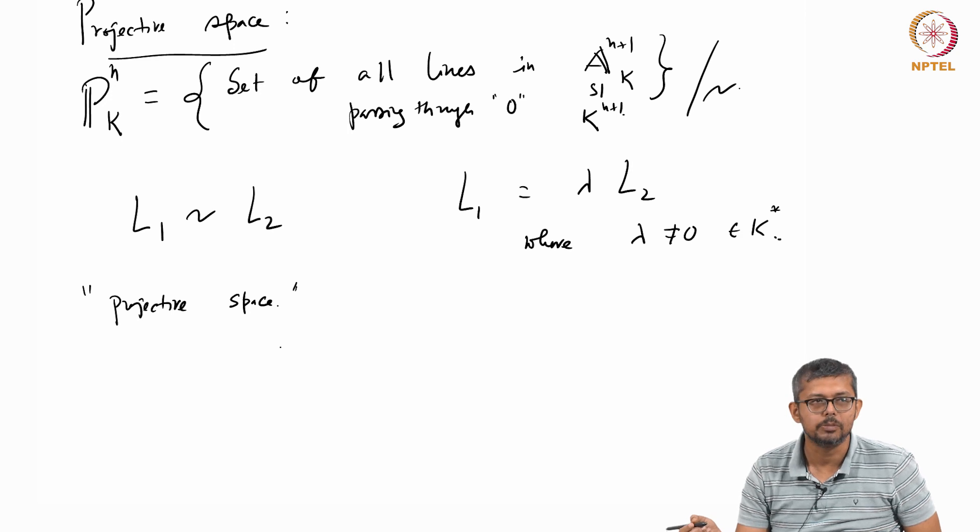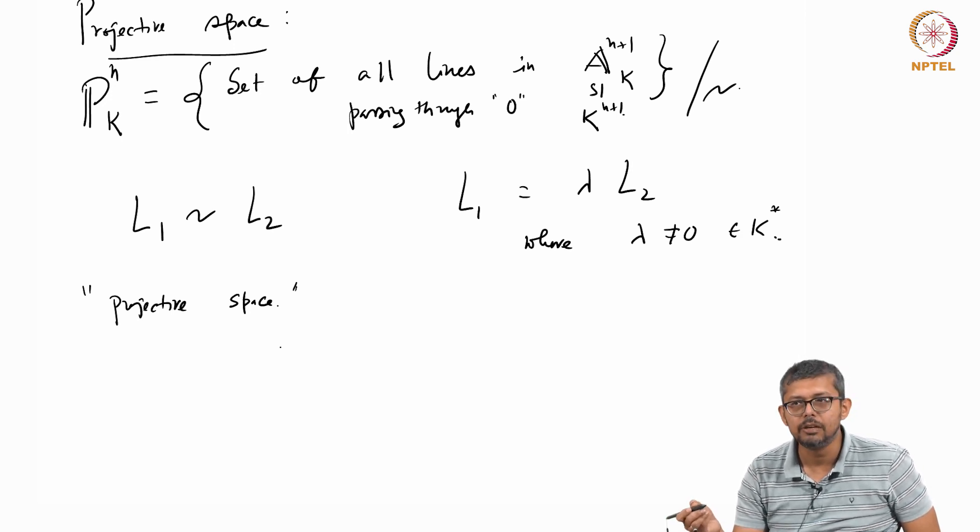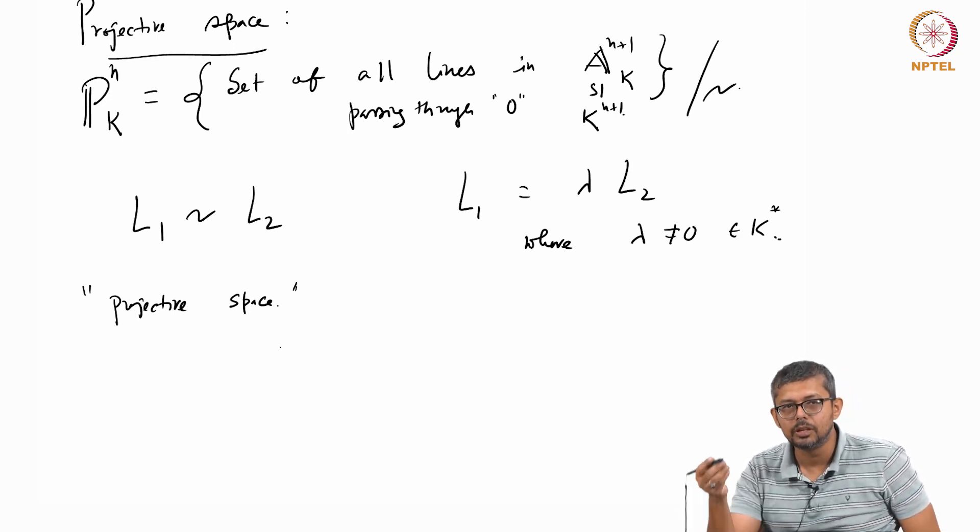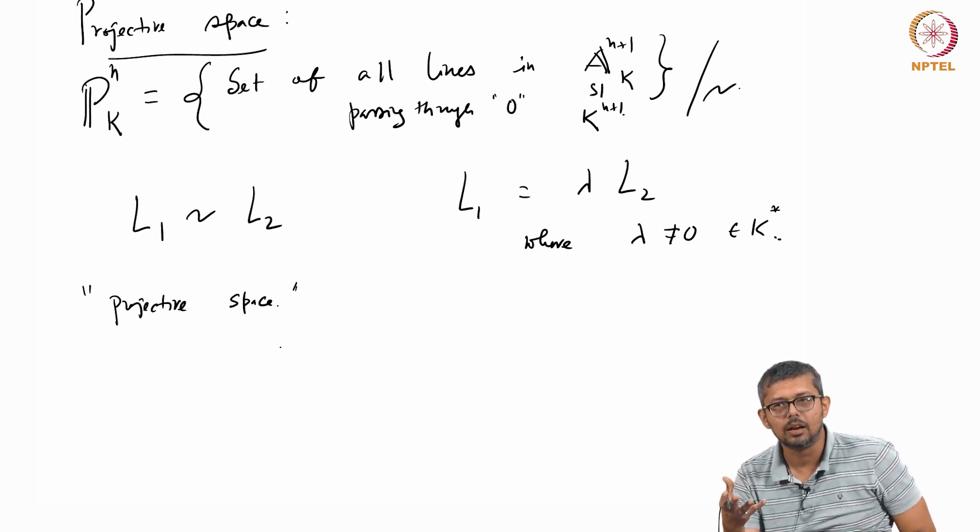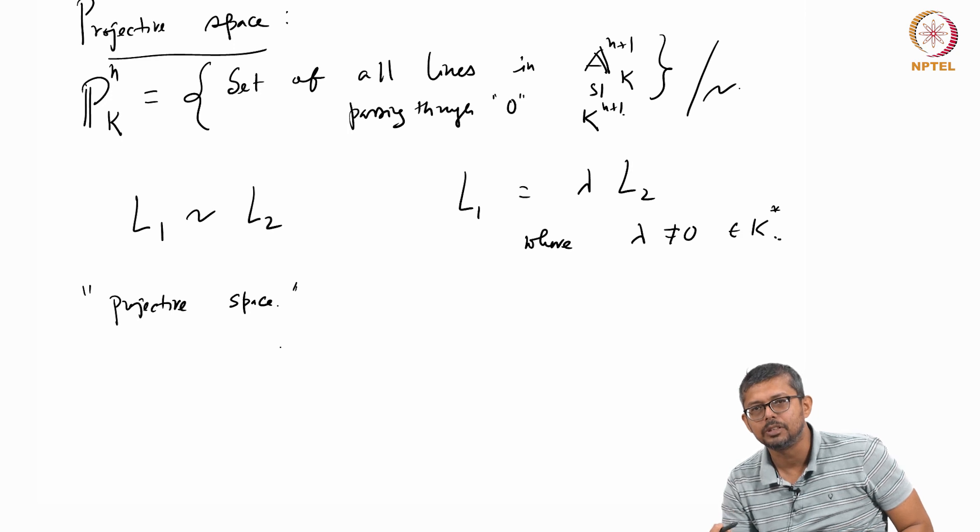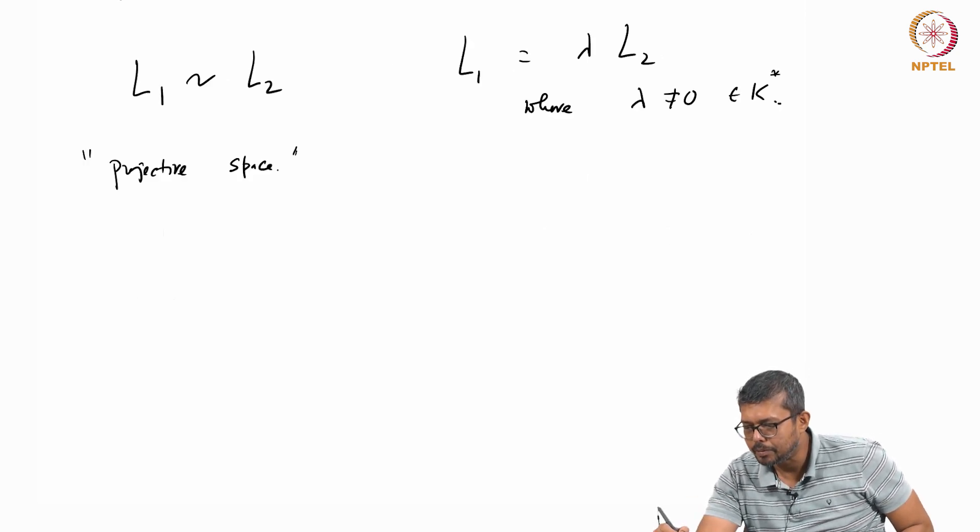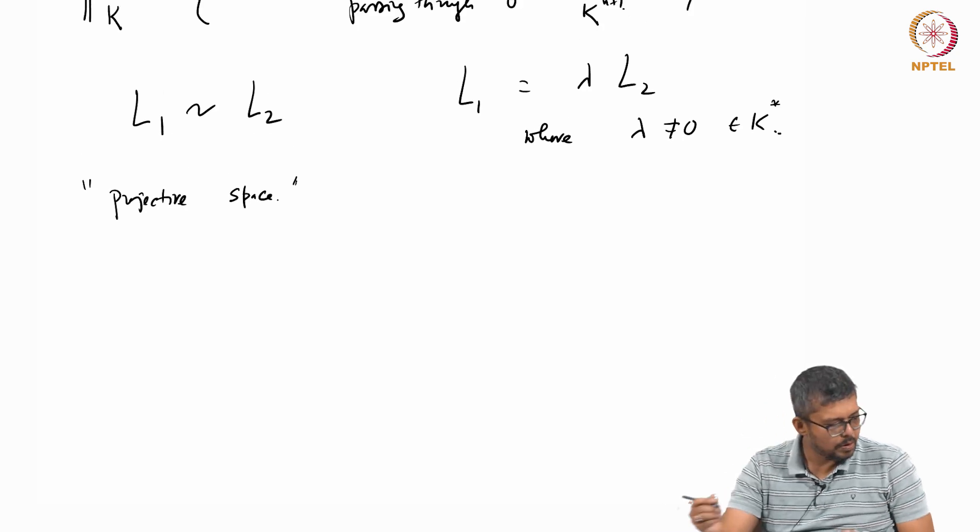That is why sheaf theory comes. Because sheaf theory, you see, when you do sheaf theory, sheaf theory is a local, it gives a local information.